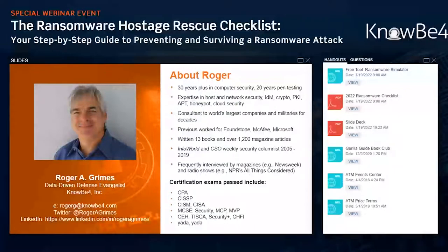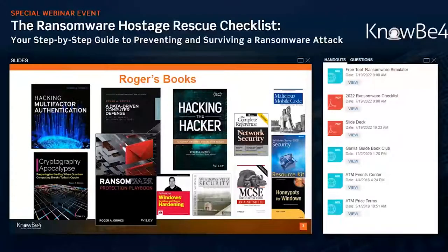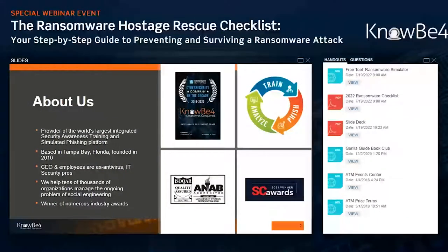I've been doing computer security for 34 years. My name is Roger Grimes. I've written 13 books and over 1,200 magazine articles. One of those books is called the Ransomware Protection Playbook. I think this webinar has a step-by-step checklist that I wish I had in that book — really good information that's not in the book. I work for KnowBe4, the world's largest integrated security awareness training and simulated phishing platform vendor. We try to help people not to be phished, because phishing and social engineering is the number one way that all hackers, malware, and ransomware attack people.